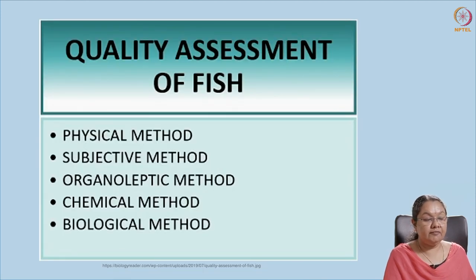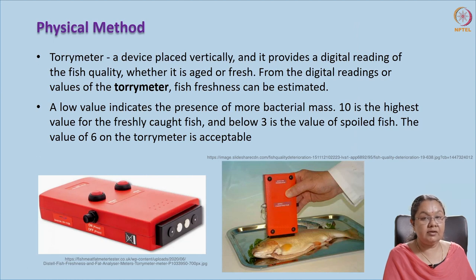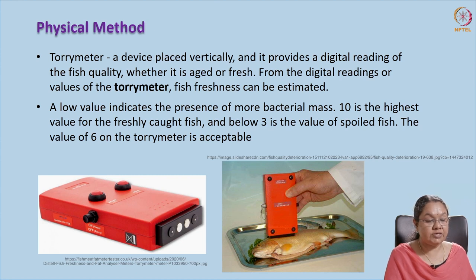Now, how do we detect the quality of fish? There are different methods: physical methods, chemical methods, biological methods, and subjective or organoleptic methods. In physical methods, we commonly use the torrymeter — an equipment very commonly used for detecting freshness of fish. It is vertically placed on the surface of the fish and gives a digital rating. Any value above 10 is considered fresh, values below 3 indicate the fish is spoiled, and values around 6 are considered acceptable. The torrymeter is very commonly used in commercial industries.